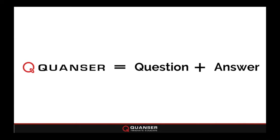Our name is an amalgamation of the two words 'question' and 'answer' — put them together and that's where we come in. We want to provide solutions so that you can challenge your students and challenge yourselves as researchers to ask those questions, and by working with Kwanzer products, get to the answer. We have over 2,500 academic institutions globally. Our founder, Jacob Apkarian, created the company because he saw the need while teaching a control systems course at the University of British Columbia.